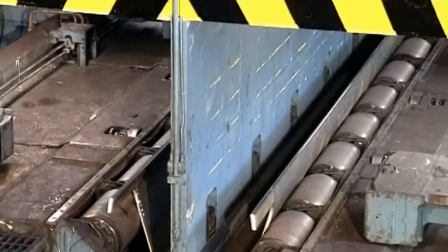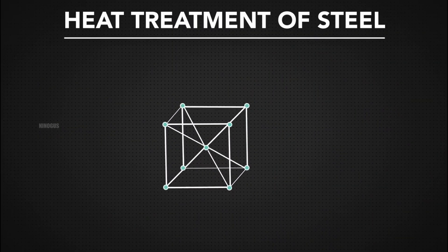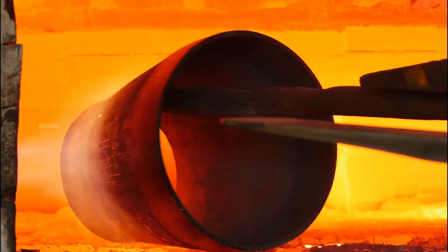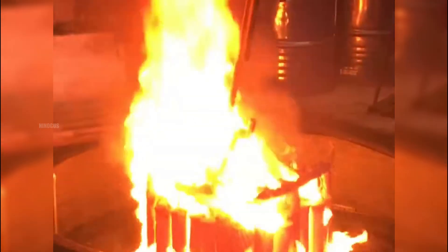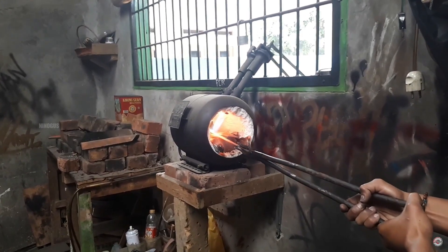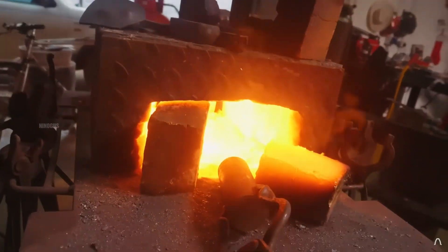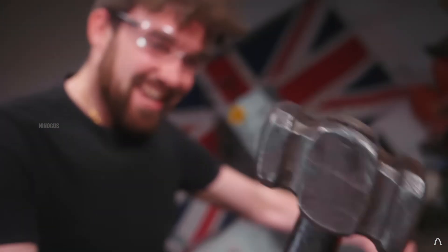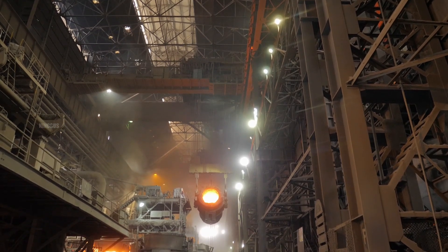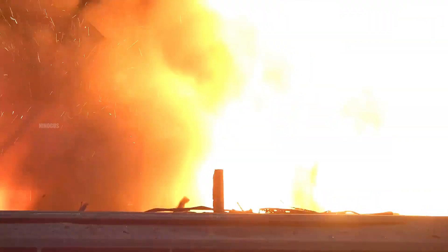One of the unique properties of steel is its ability to be modified through heat treatment. This process includes several techniques such as hardening, tempering, annealing, and normalizing. A common example of heat treatment is hardening, where steel is heated to its austenitic temperature and then rapidly cooled. For instance, a blacksmith quenches a heated blade by immersing it in water or oil after it has been heated to a glowing red state. This process increases the hardness of the steel. The higher the carbon content in the steel, the harder it becomes. However, the trade-off is that the steel also becomes more brittle and prone to breaking. Therefore, selecting the appropriate type of steel must be based on its intended application.